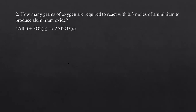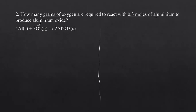Let's look at a second example. The question reads: how many grams of oxygen are required to react with 0.3 moles of aluminium to produce aluminium oxide? We are interested in oxygen. Since the equation was not given, we write it ourselves. Ensure the equation is balanced — let's be acquainted with writing chemical equations without assistance.